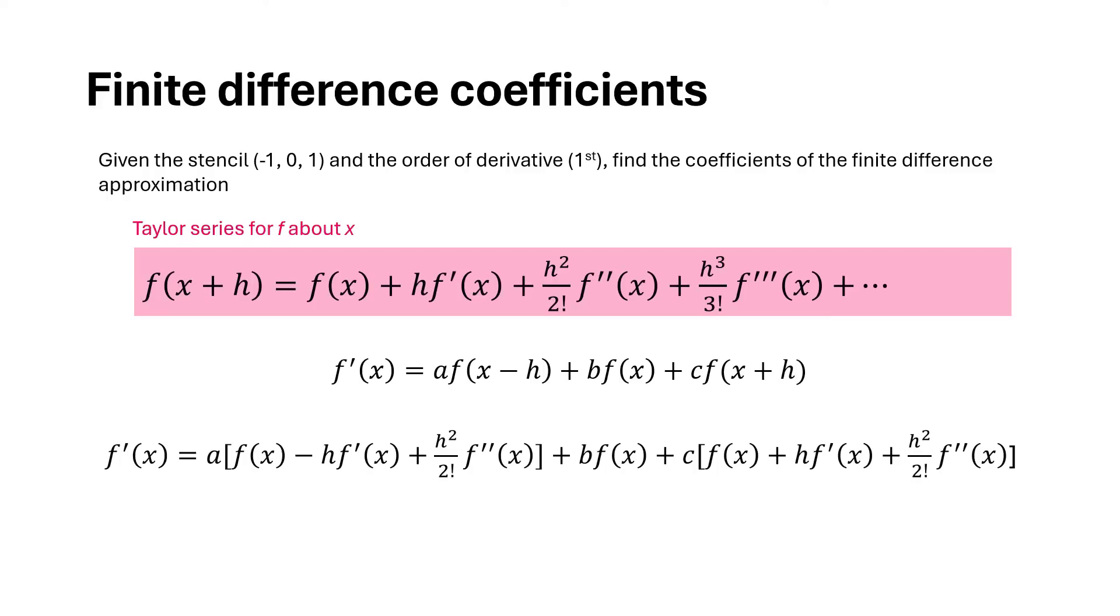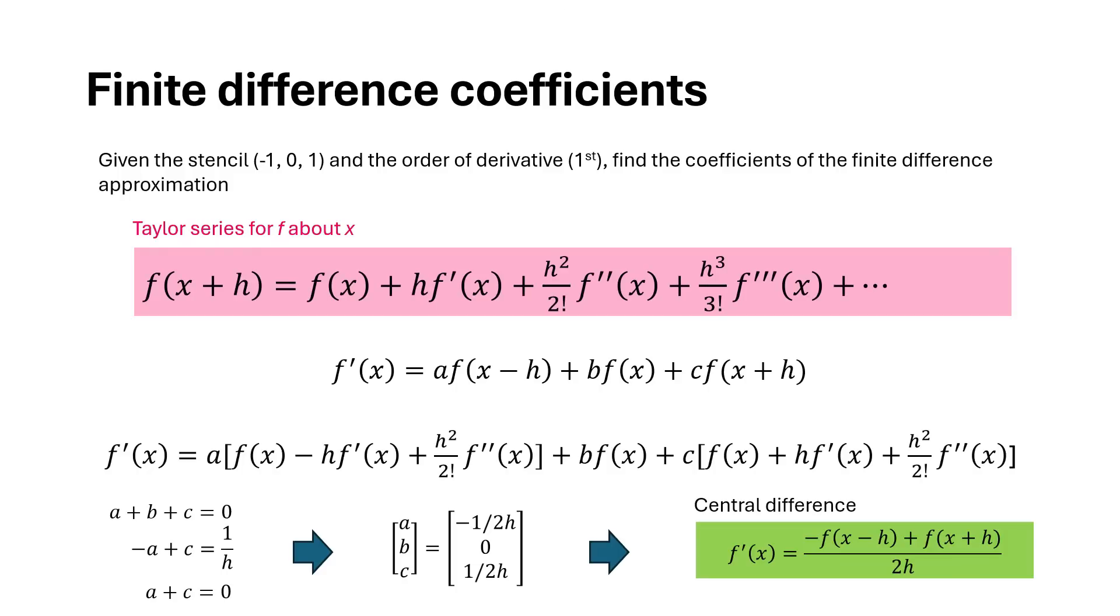And since we have three coefficients we'll keep the first three terms of the Taylor series expansion. With a little bit of manipulation and comparison of the coefficients between the left hand side and the right hand side we can get these three equations. And we can solve this system of algebraic equations to find the values of a, b, and c. We can then place these values into the above approximation to get the desired central difference approximation of the first derivative.